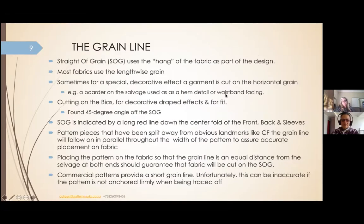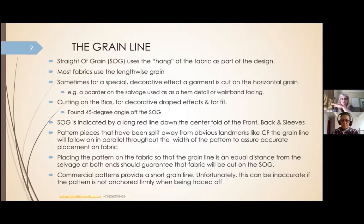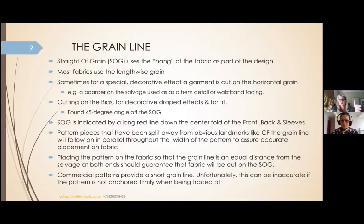Straight of grain — SOG — uses the hang of the fabric as part of the design and is usually on the lengthwise of a fabric, so you've got selvages on either end and you're using the long side. Sometimes for special decorative effects a garment is cut on the horizontal grain — for a contrast in the waist facing, a hem detail, or a placket on a shirt. Just know that fabric must be very stable both on the weft and the warp of the grain, otherwise you can have problems. If it's not stable and you still want to use the horizontal, I would recommend you fully fuse it to stabilize it first.